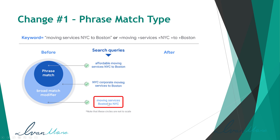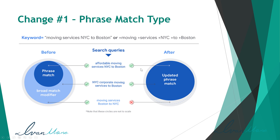If someone types in 'moving services Boston to NYC,' under the old phrase match type this would not have shown because the order matters — even though all the words moving services, NYC, and Boston are present, the order is not the same. For the broad match modifier, however, your ads would have shown because all five words — moving, services, NYC, to, and Boston — are somewhere in the search term, and as long as they're anywhere in the search term, your ads would have shown under the old broad match modifier.